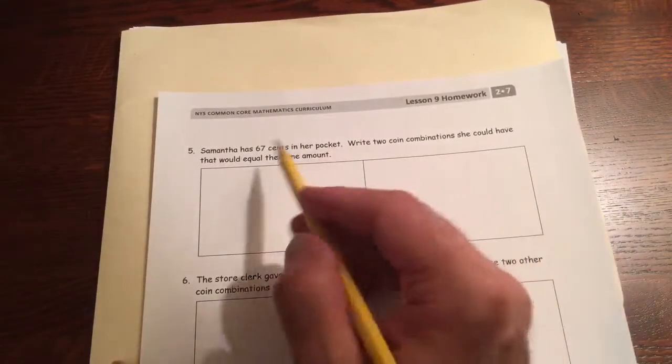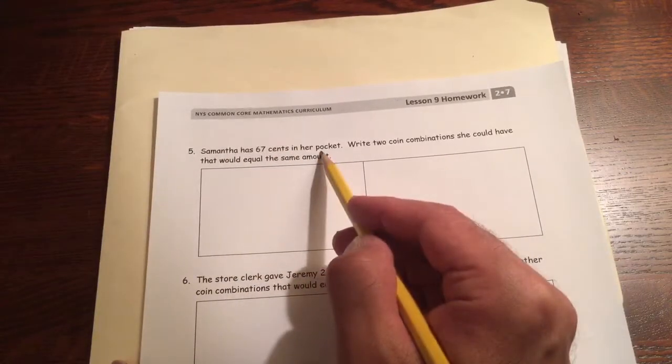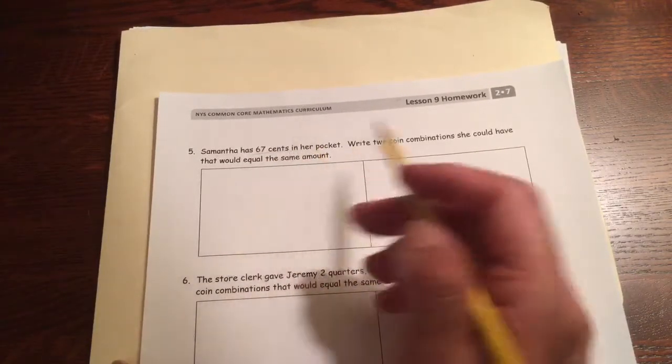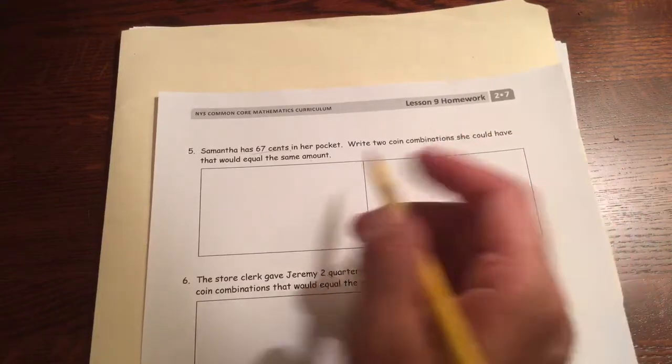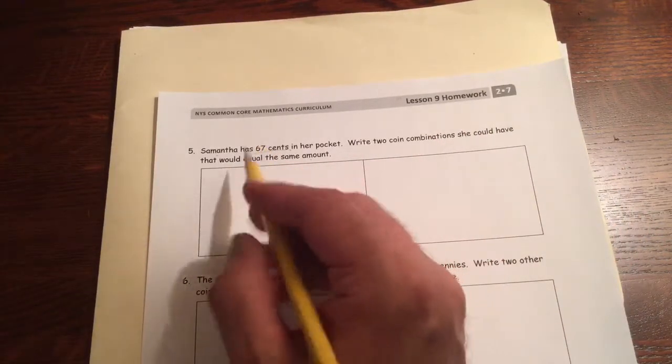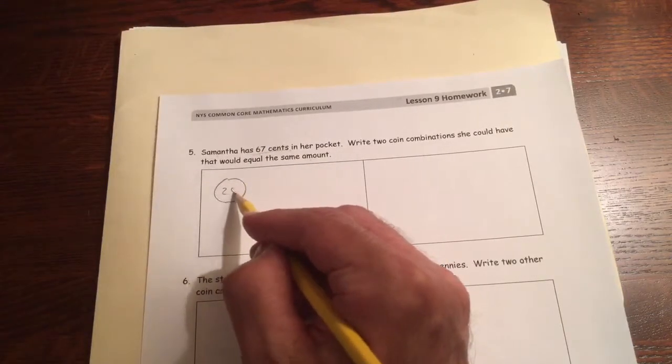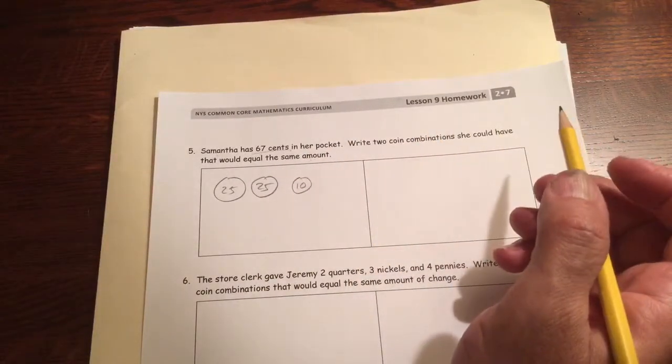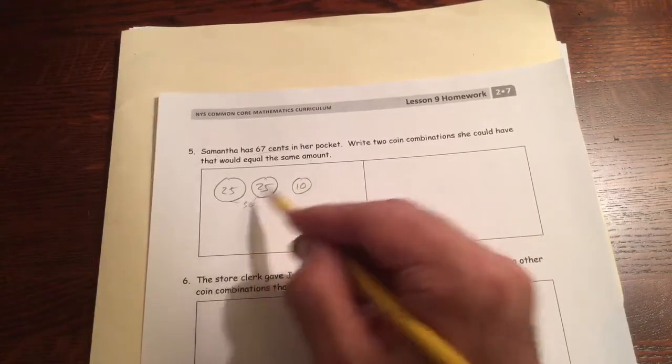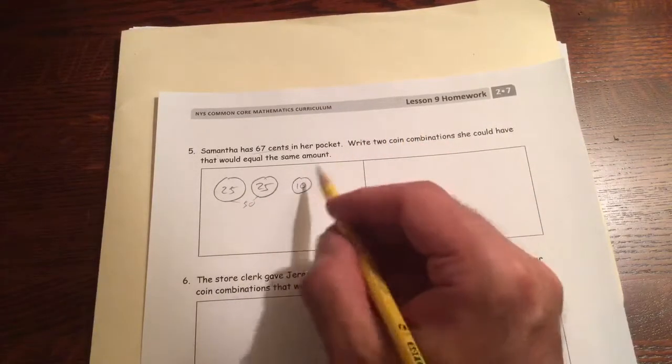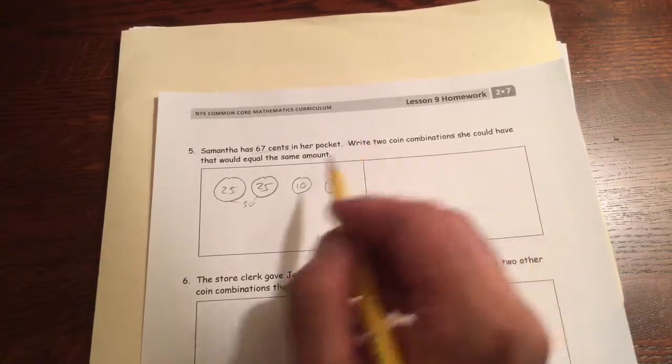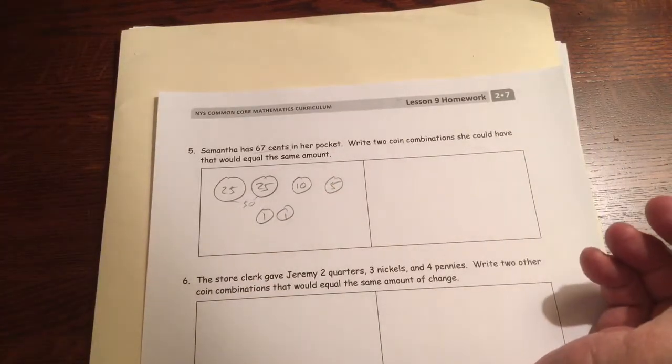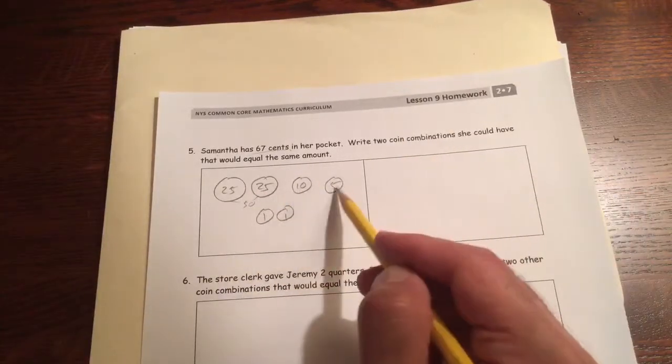And now here we have Samantha has 67 cents in her pocket. Write two coin combinations she could have that would equal the same amount, the same 67 cents. So we're going to find two ways to draw 67 cents. So I could do it 67. I could get to 50. I could do two quarters for 50. And then a dime would get me to 60, right? Because that's 50 right here. That's 60. And now I need 65, right? And then now I need two more to get to 67.